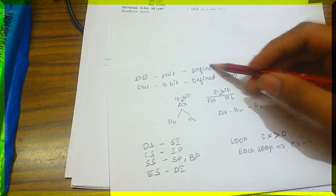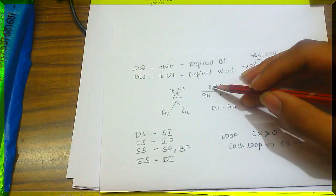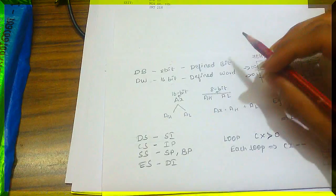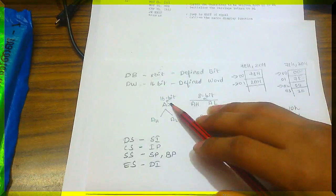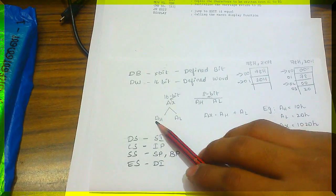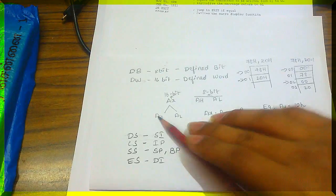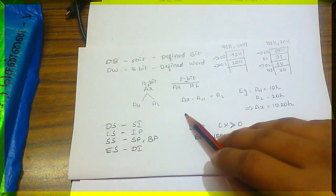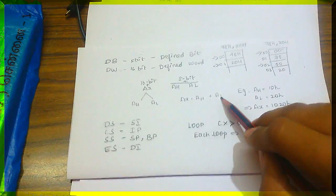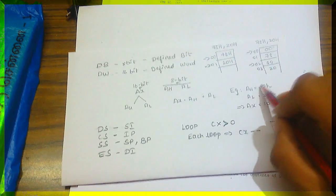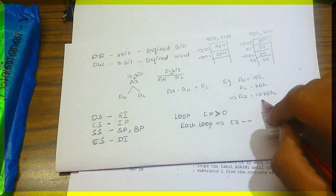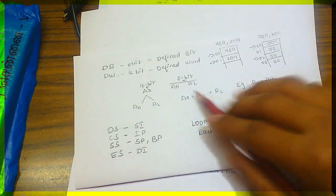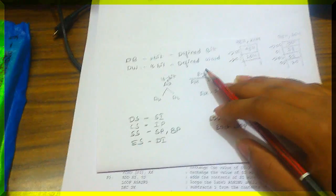There are general purpose registers: AX for accumulation, BX for base address, CX, and DX — used for storing addresses or data. AX is 16-bit and is divided into AH and AL, that is the high and low bytes. AH contains 8 bits and AL contains 8 bits. For example, if AH is 10H and AL is 20H, then AX will be 1020H.